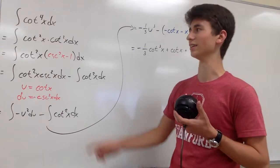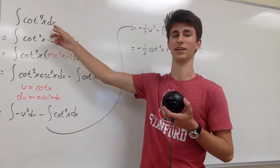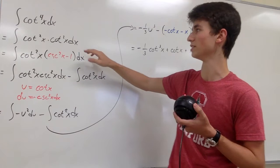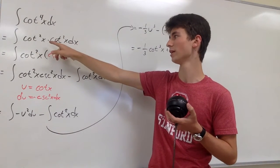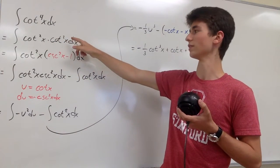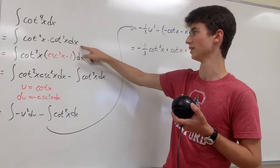Hi, I'm going to be showing you guys how to integrate cotangent to the fourth of x dx. We're going to start by splitting the fourth power into two square powers. So you're going to get cotangent squared of x times cotangent squared of x dx.